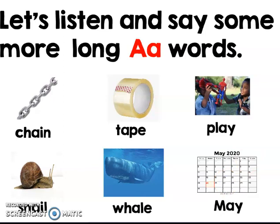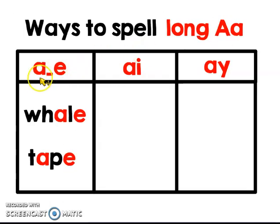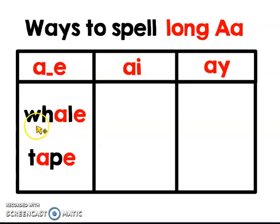Did you hear the long A sound in those words? I bet you did. And I know you can see the three different ways we spell the long A sound: A consonant E, A-I, and A-Y. Let's take a closer look at them. A consonant E — we have the picture of the whale. W-A-L-E. Remember, E is a silent E, it doesn't say anything. And T-A-P-E, tape. A consonant E.